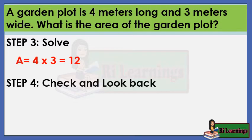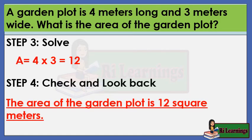Step 4: Check and look back. Double-check your work. See if you have performed the operations correctly and got a reasonable answer. If your answer does check out, write your final answer with the correct labeling. The area of the garden plot is 12 square meters.